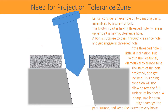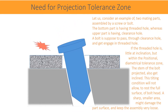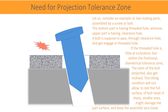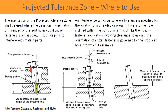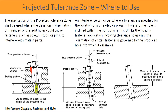A smaller contact area might damage the part surface and keep the assembly very loose. The application of the projected tolerance zone shall be used where the variation in orientation of threaded or press fit holes could cause fasteners, such as screws, studs, or pins, to interfere with mating parts. An interference can occur where a tolerance is specified for the location of a threaded or press fit hole, and the hole is inclined within the positional limits.